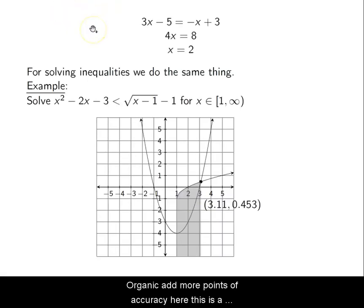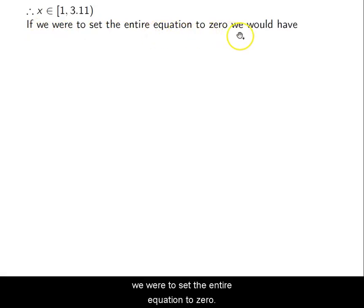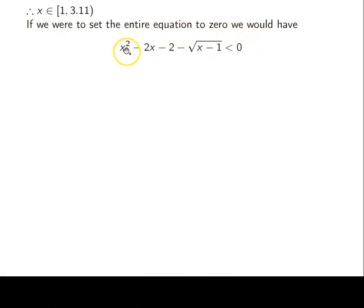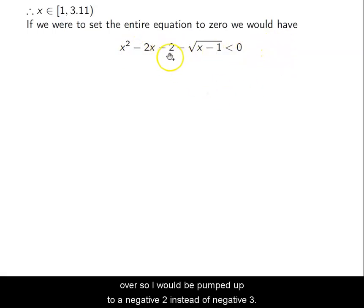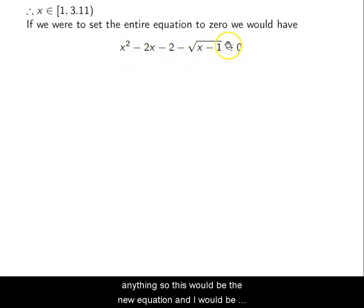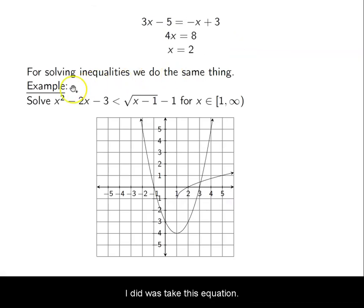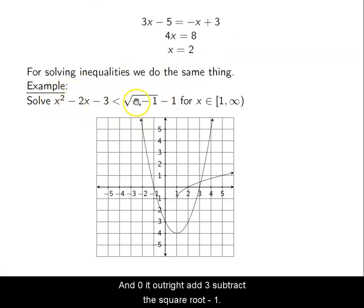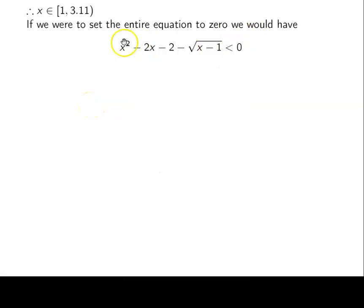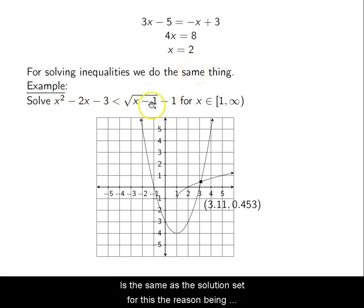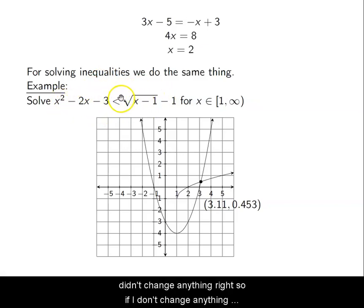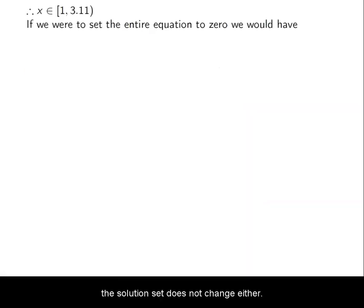I can add more points of accuracy here. If we were to set the entire equation to 0 — move the right side over — that minus 1 would be added over, bumping me to -2 instead of -3, and the square root doesn't combine with anything, giving a new single equation. I'd then look for when this is less than or equal to 0. All I did was take the original inequality and zero it out by subtracting the square root minus 1. This is an entirely new equation, but its solution set is the same — because whatever I did to one side, I did to the other, so the solution set does not change.